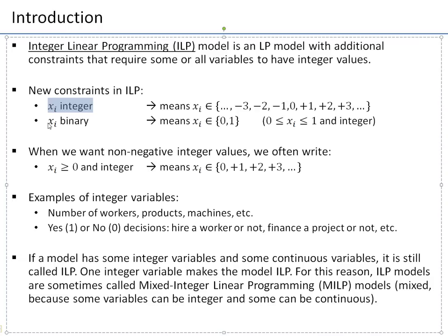A special case is 'xi binary,' which limits the integer values to just 0 and 1. This is quite often a very useful decision variable, like an indicator variable. Essentially, xi binary is equivalent to saying xi is integer and bounded between 0 and 1, because between 0 and 1 there are only two integer numbers — 0 and 1 — and the other values are fractional, so the integer requirement excludes them.